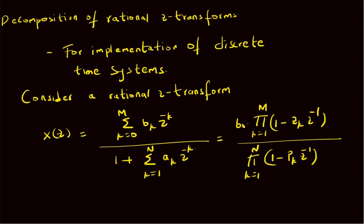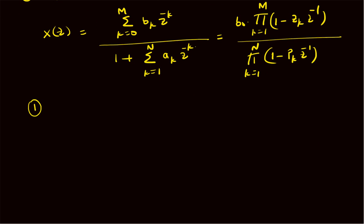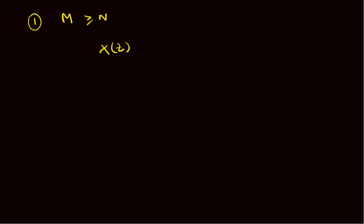Now let us understand the nature of this z-transform when decomposed. Consider Case 1 where the degree of the numerator is greater than or equal to that of the denominator, that is M ≥ N. When M ≥ N, X(z) is like an improper fraction, and we can write it as X(z) equals summation k equals zero to M minus N of c_k z to the power minus k, plus a proper fraction X_pr(z). The term M minus N represents the degree difference, giving M minus N extra coefficients as integer components.